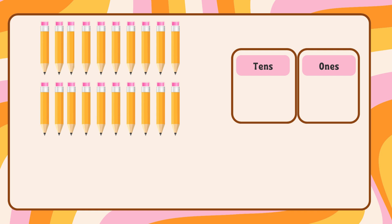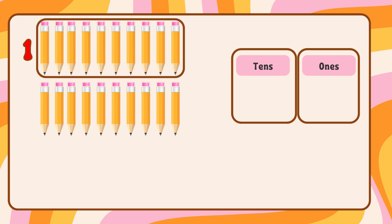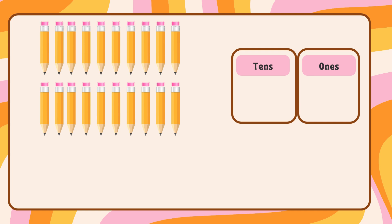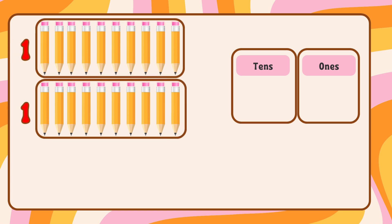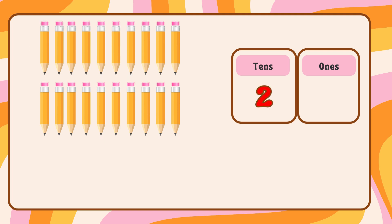1, 2, 3, 4, 5, 6, 7, 8, 9, 10. 1, 2, 3, 4, 5, 6, 7, 8, 9, 10. We have 1 group of tens. 1, 2, 3, 4, 5, 6, 7, 8, 9, 10. We have another group of 10. So we have 2 tens and 0 ones. So the number is 20.